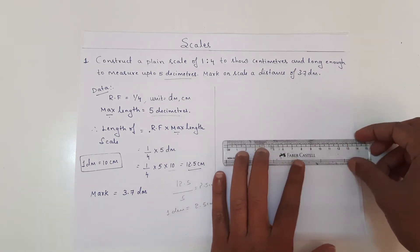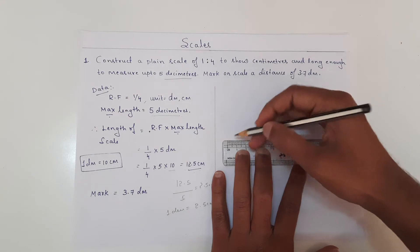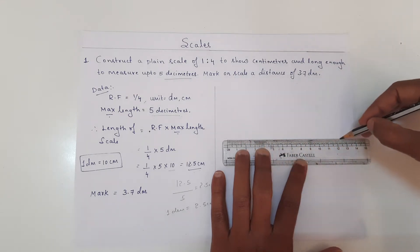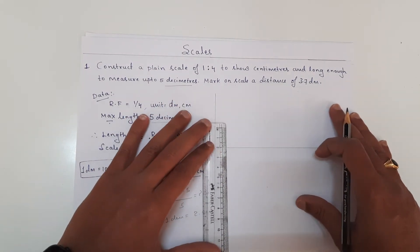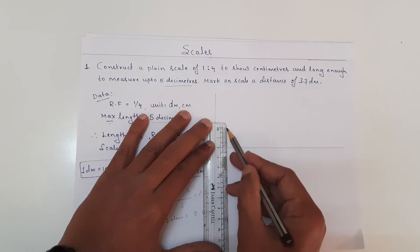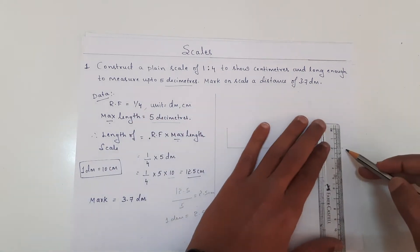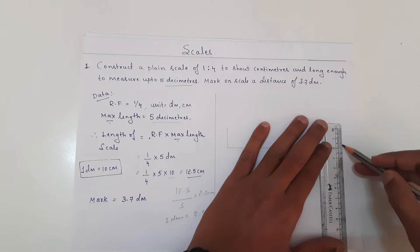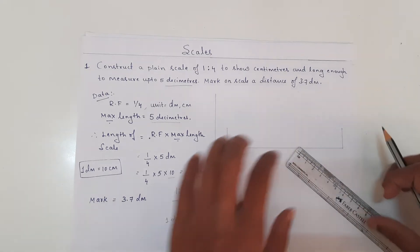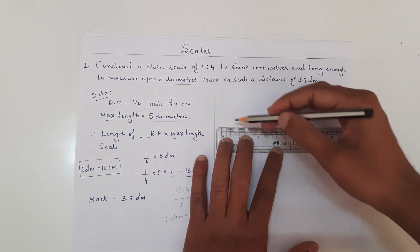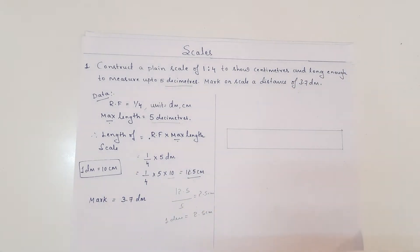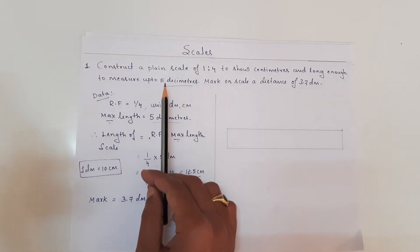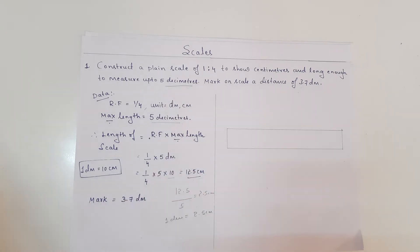I am going to draw a line that measures 12.5 centimeters. Then I am going to draw vertical lines of 2 centimeters — you can also take 1 centimeter depending on your requirement. I am going to draw a scale of length 12.5 and 2 centimeters, then divide this scale into 5 equal parts because I need to represent 5 decimeters.